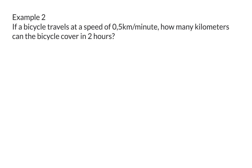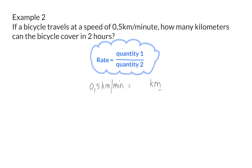Example 2: If a bicycle travels at a speed of 0.5 km per minute, how many kilometers can the bicycle cover in 2 hours? In this example, the rate is given as speed of 0.5 km per minute. That means our quantity 1 will be in kilometers, and our quantity 2 will be in minutes.